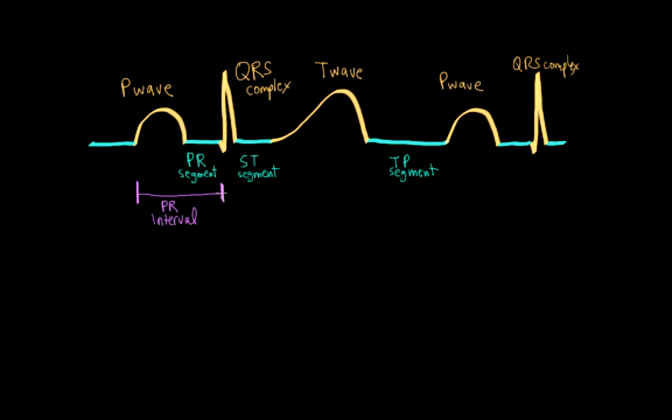The next important interval is actually the width of the QRS complex, and that's called the QRS interval. And it represents the spread of depolarization through the ventricles.